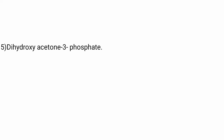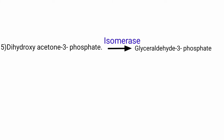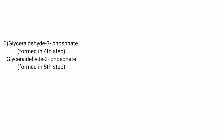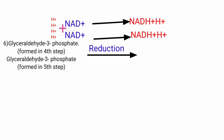In step 5, the dihydroxyacetone-3-phosphate formed in step 4 is isomerized to glyceraldehyde-3-phosphate by the enzyme isomerase. So after steps 4 and 5, we have 2 molecules of glyceraldehyde-3-phosphate. In step 6, reduction occurs — addition of hydrogen and removal of oxygen. These 2 molecules of glyceraldehyde-3-phosphate undergo reduction, losing hydrogen molecules, which are accepted by the coenzyme NAD+, forming 2 NADH + H+.